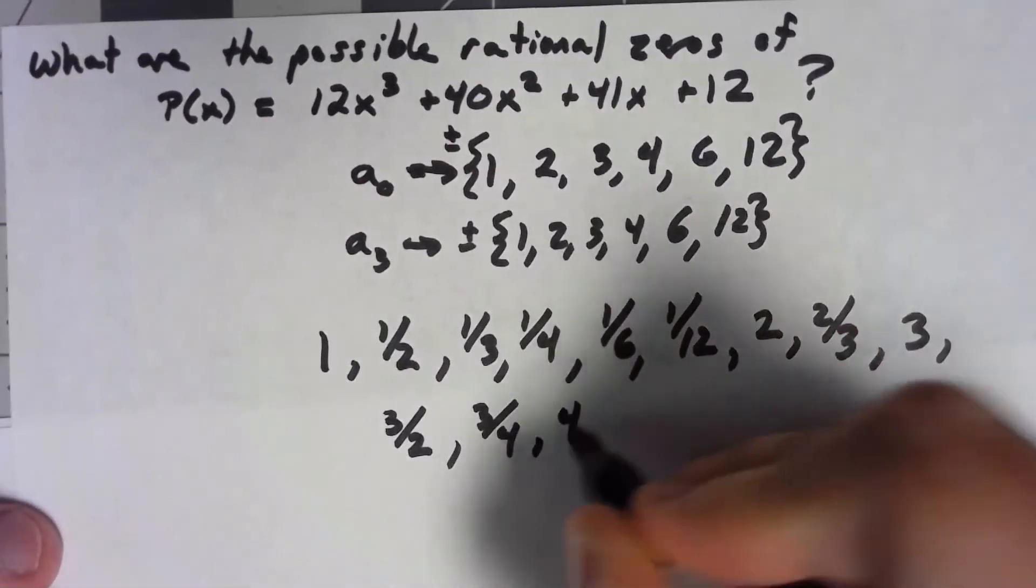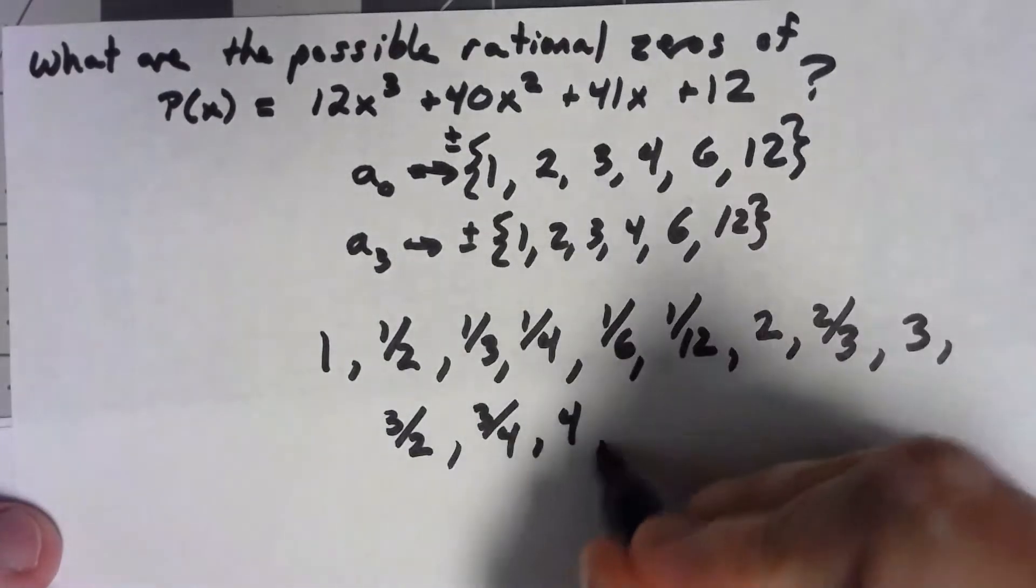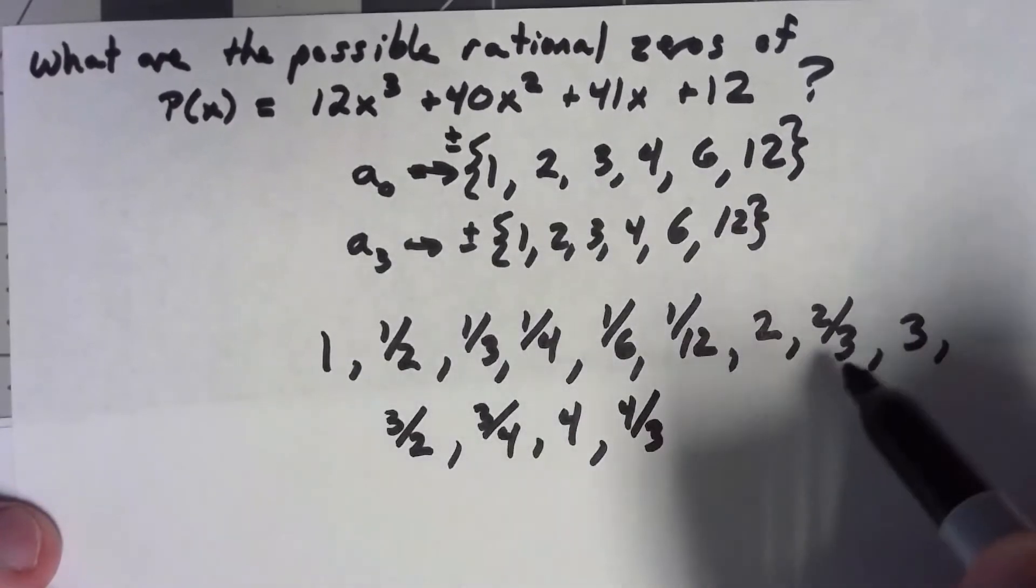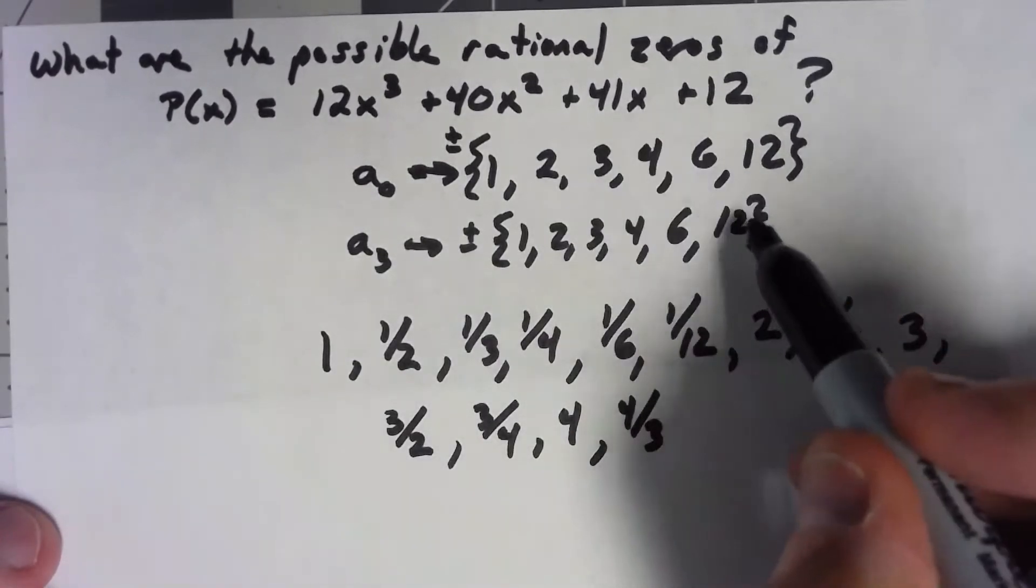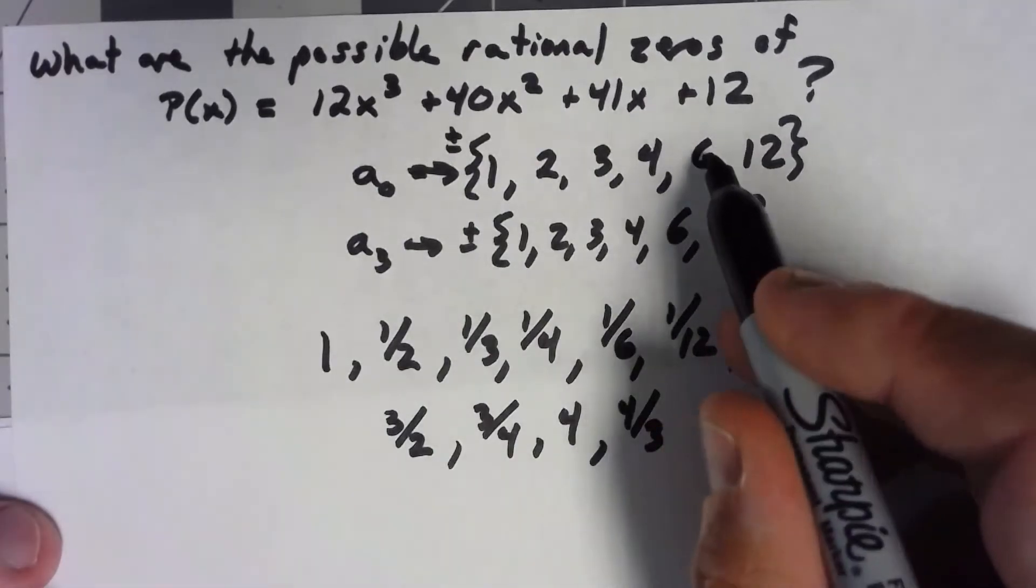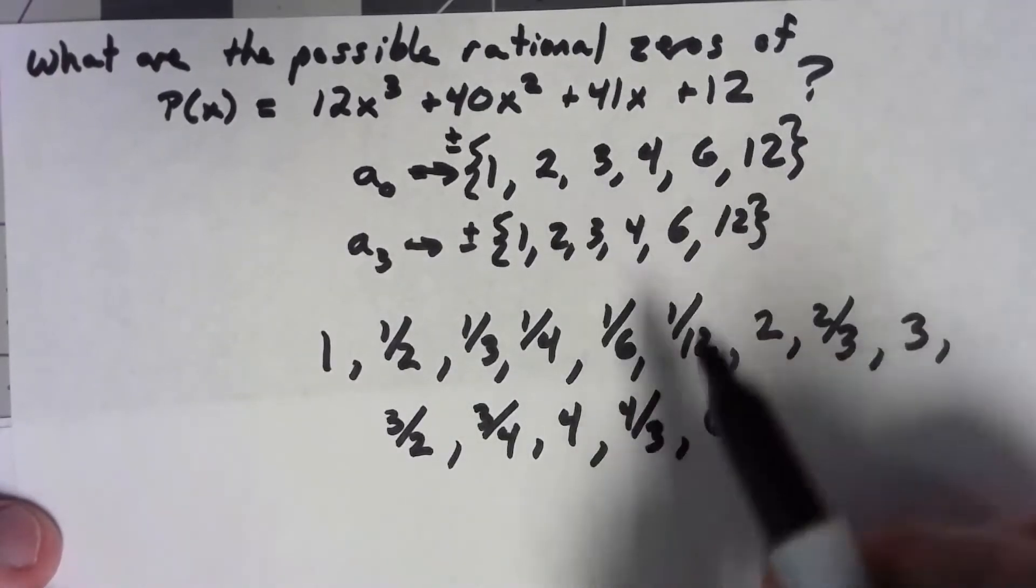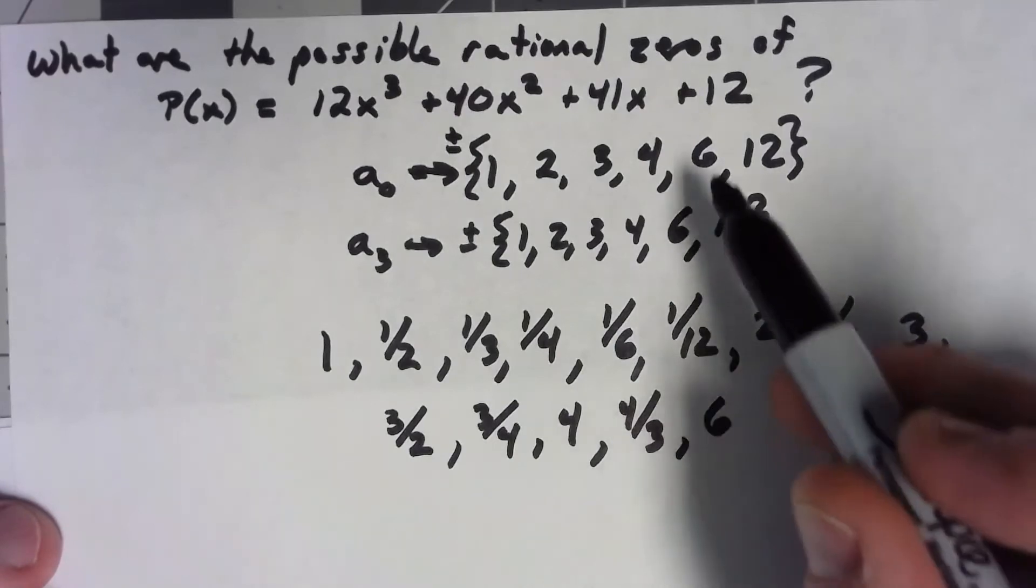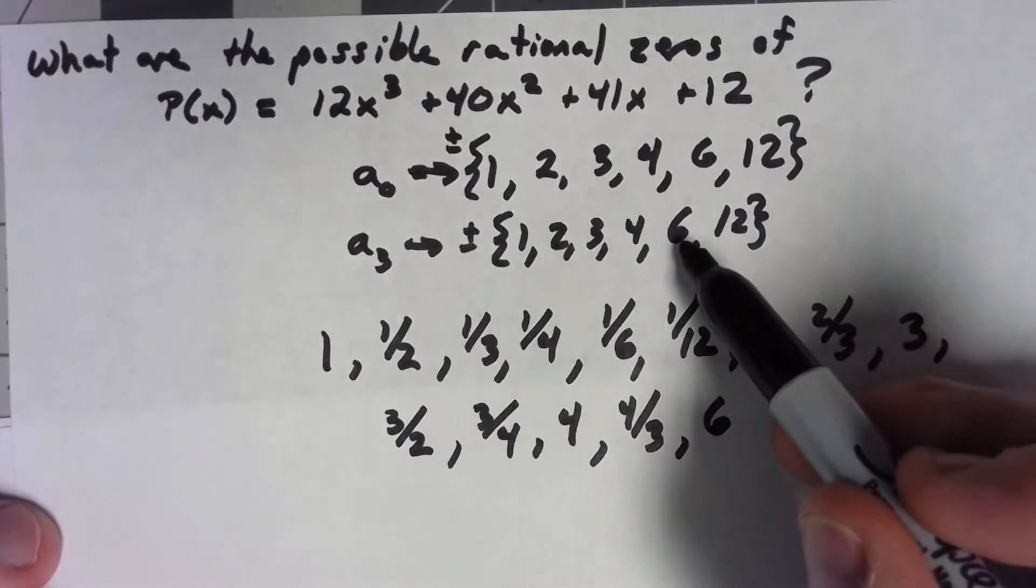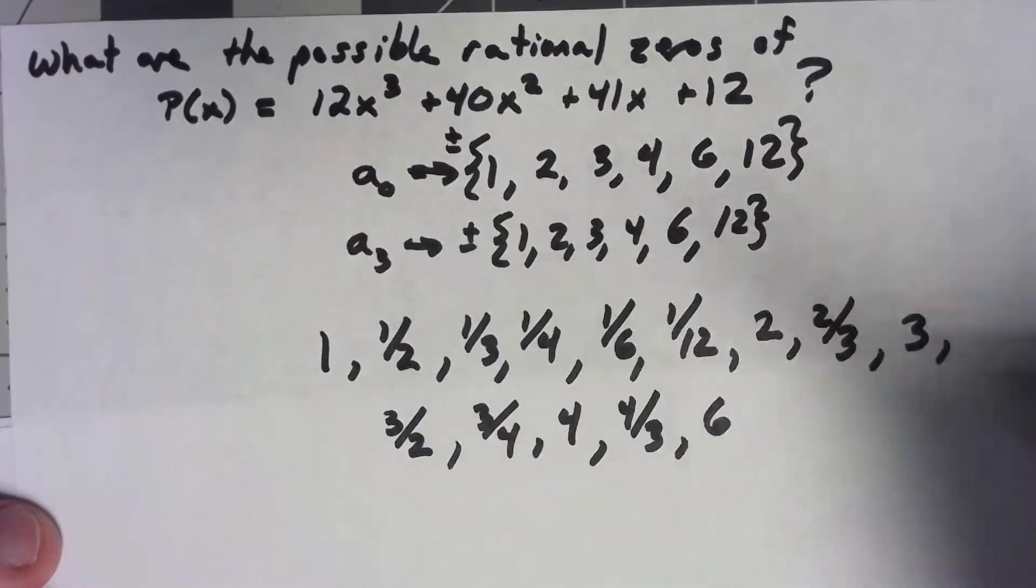4 over 1. 4 over 2 is 2, which is already in there. 4 thirds. 4 over 4 is 1. 4 over 6 is 2 thirds. 4 over 12 is 1 third. All those things are in there already. 6 can be divided by 1. 6 over 2 is a 3, which I've got. 6 over 3 is a 2, which I've got. 6 over 4 is 3 halves, which I've got. 6 over 6 is 1, which I've got. 6 over 12 is 1 half, which I've got.